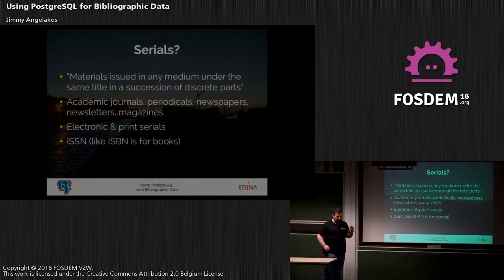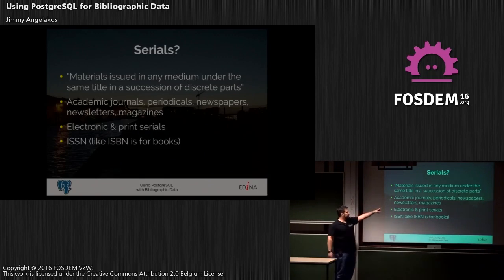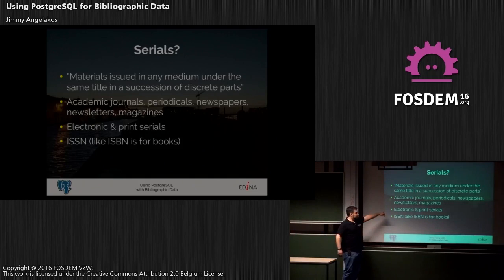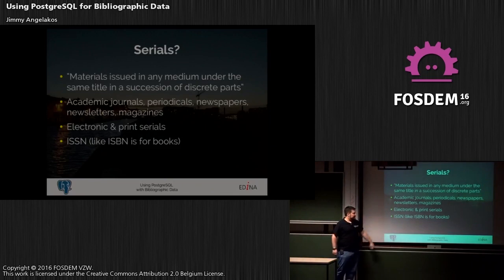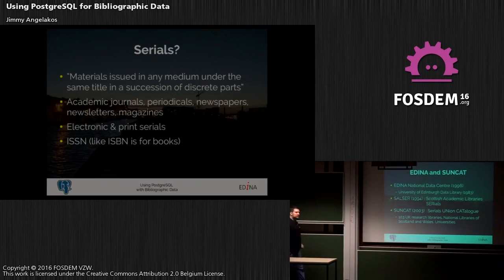Let's put this aside and look at what serials are. Serials are not numbers in this context — serials are series of publications issued under the same title. It covers academic journals, periodicals, newspapers, newsletters, and magazines: things that are published in a regular or irregular fashion and have no fixed end to their publication. We can have them in electronic form as PDFs or some other format, or printed as we have had for decades. Their basic identifier is the ISSN, which is the equivalent of the ISBN for serials.